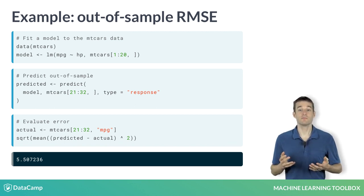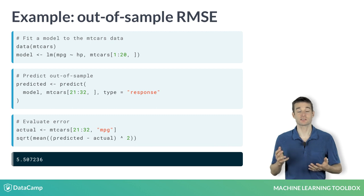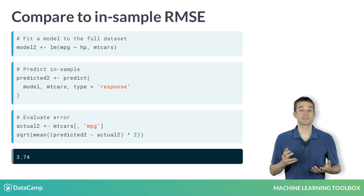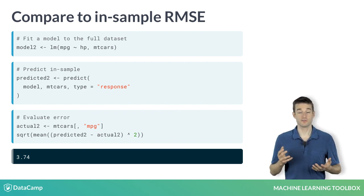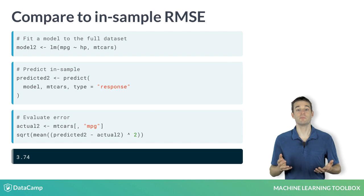RMSE is a measure of the model's average error. It has the same units as the test set, so this means our model is off by 5 or 6 miles per gallon on average. Compared to in-sample RMSE from a model fit on the full dataset, our model is significantly worse. If we had used in-sample error, we would have fooled ourselves into thinking our model is much better than it actually is in reality.